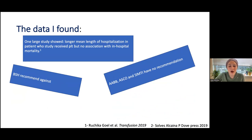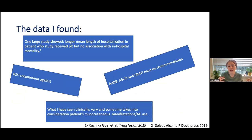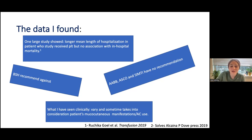There is no clear cut answer. When a hematologist is making this decision, they're looking at the patient's clinical status — the extent of purpura or ecchymosis, gum bleeding, whether the patient needs anticoagulation. Use your best judgment and consult hematology.